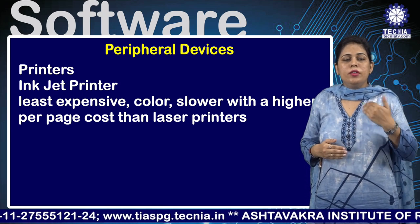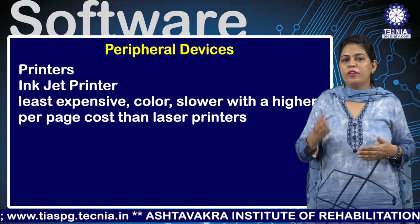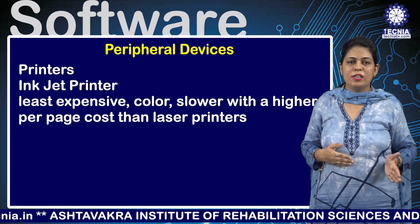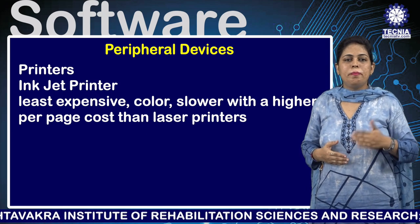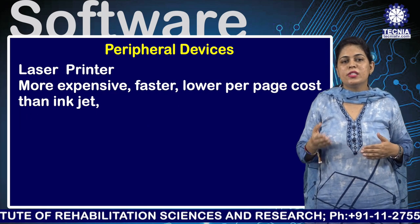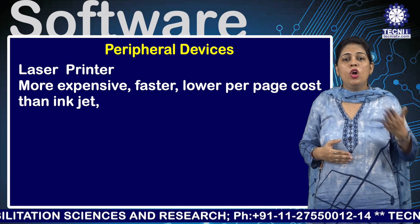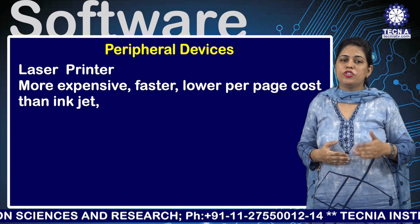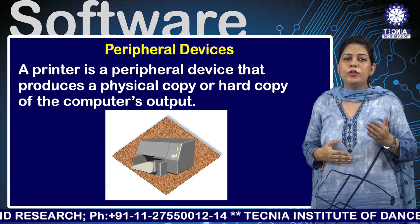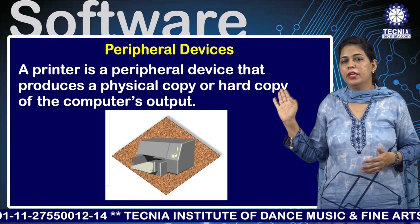There are many types of printers available. An inkjet printer is the least expensive color option, though slower with a higher per-page cost than a laser printer. A laser printer is more expensive but faster with a lower per-page cost. A printer is a peripheral device that produces a physical copy — or hard copy — of the computer output.